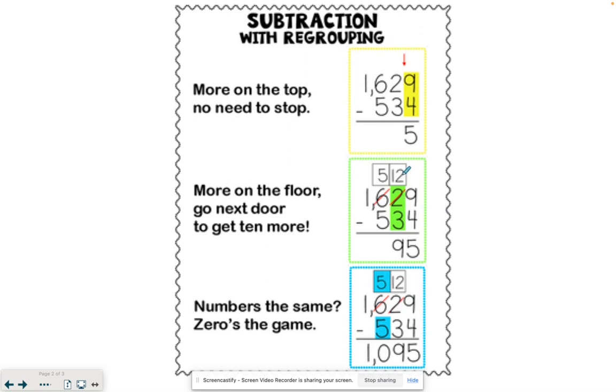Now we may subtract. Twelve minus three gives us nine. If we have the same number on the top and the bottom, zeros the game.